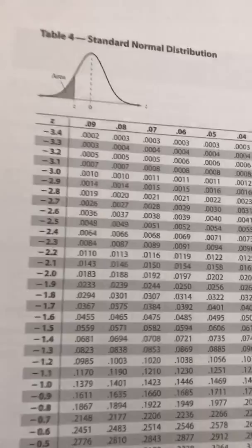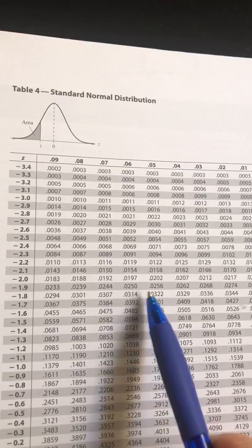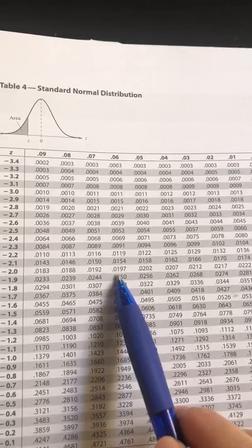To find the rejection region, go to your z-table and look up 0.025. The corresponding z-score is negative 1.96.